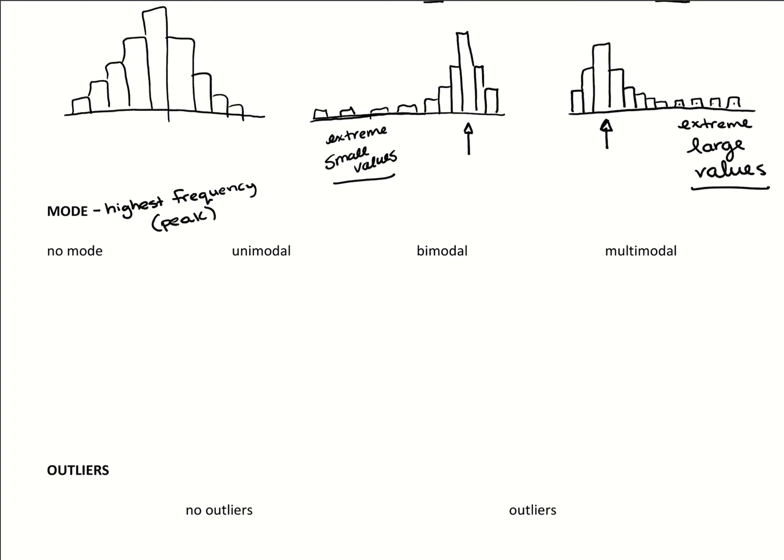If we have no mode, that's going to be a uniform distribution. So it should look something like this, basically roughly even like that, where you're just getting the same frequency across the number line as you collect your data.